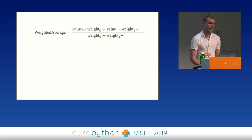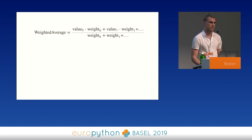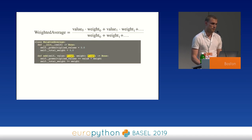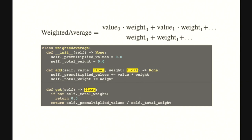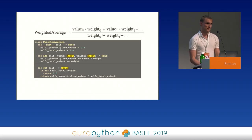Let's take the example of a weighted average — a very simple computation where you add up values and average them using weights. We want to implement this average as incrementally updatable, meaning you can keep adding values to the average and getting back the result. You might write a simple class that starts with some internal pre-computed values and lets you add a weighted value, plus a simple method that can calculate the average at any time. You'll notice we are using floats as the data type, explicitly saying we can only calculate averages for floats.